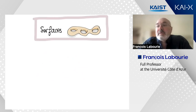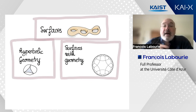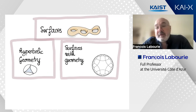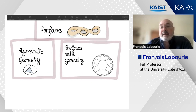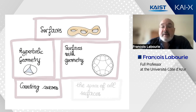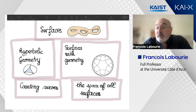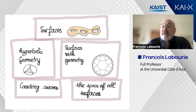I'm going to talk about surfaces: how you build them, how you classify them. Then I'll talk about surfaces with geometry — what it means for a surface to have some geometry — and I'll concentrate mainly on hyperbolic geometry. That's going to take at least half of the talk. Then I'll move to something more specific to Mirzakhani's work: counting curves on surfaces, and the space of all surfaces — the Teichmüller space.